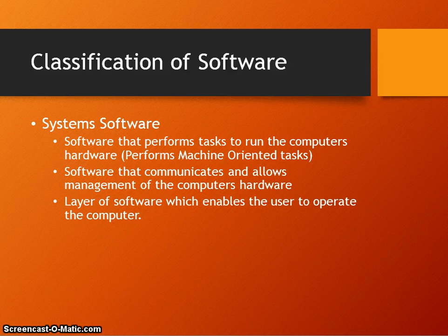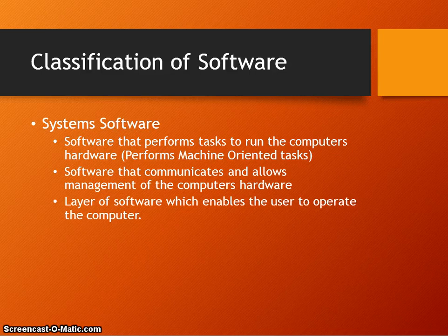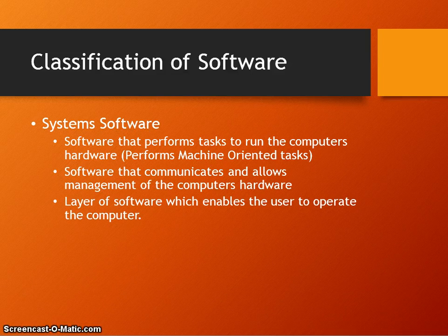Utility programs may be used for copying a disk using a hard disk drive or CD drive, formatting a disk by clearing storage space, or disk defragmentation. As you can see, these utility programs provide some kind of utility. Language translators translate source code into machine code. Types of language translators include compilers, interpreters, and assemblers. Library programs are a bank of tried and tested routines that can be used by different software.